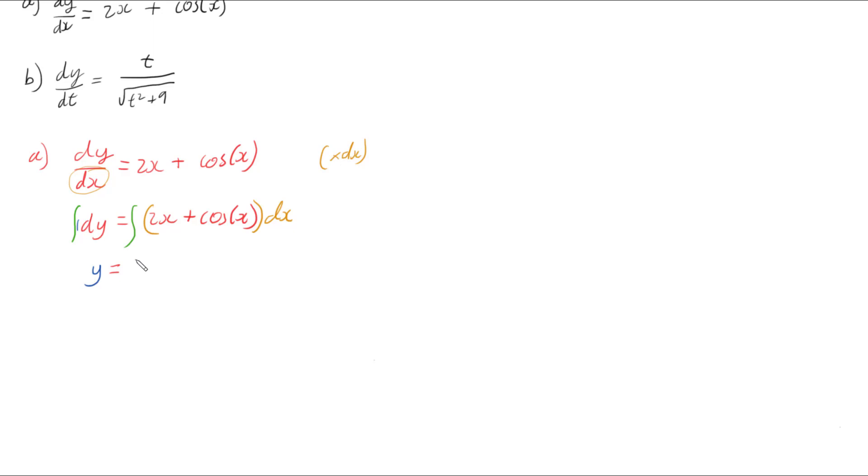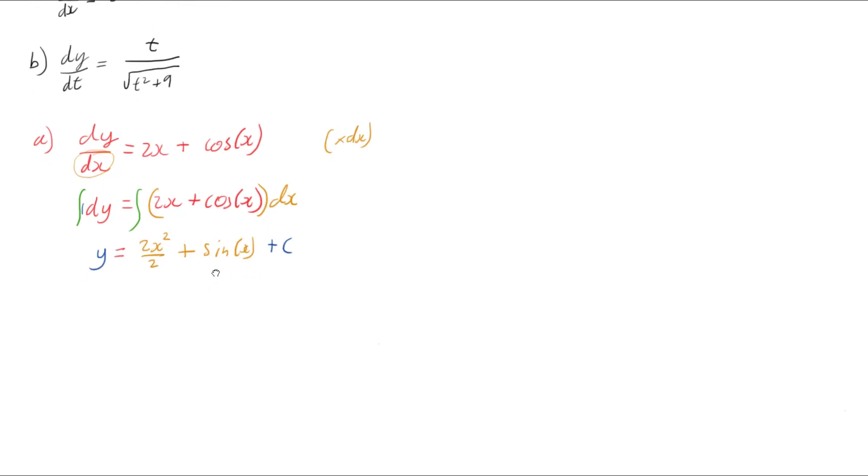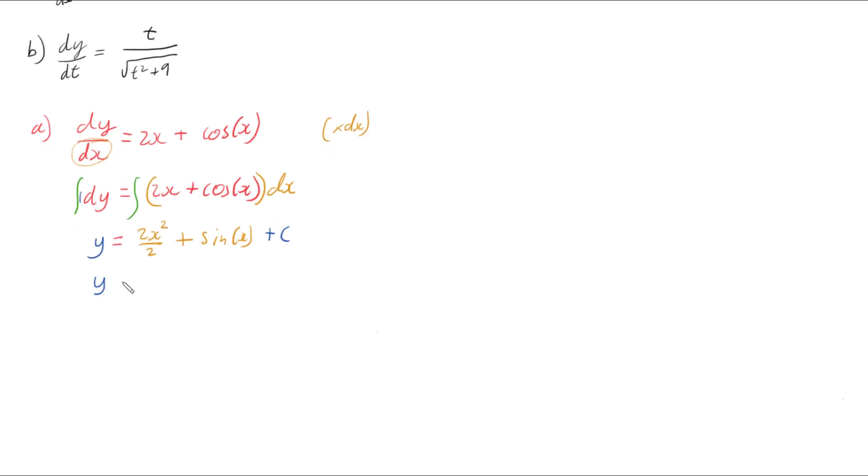Now 2x integrates to 2x squared over 2, and cos(x) integrates to sin(x). And we also have a plus c that we've got to remember. And so we have y equals, the twos cancel out, so I've just got x squared plus sin(x) plus c.